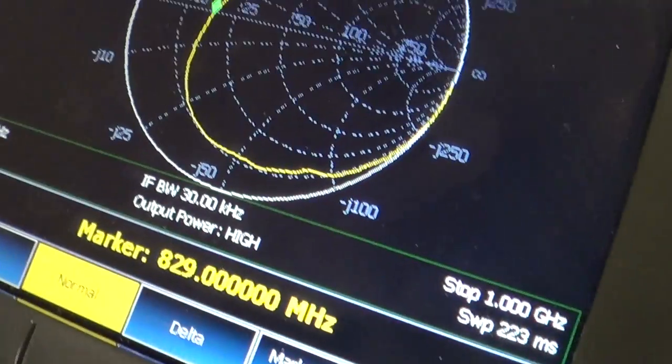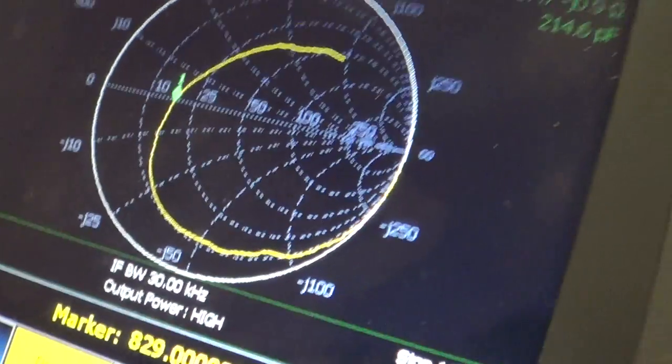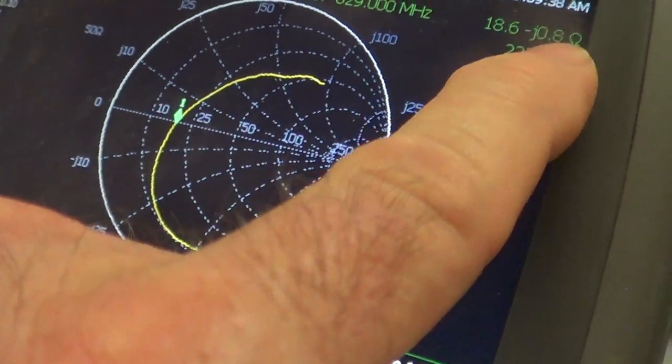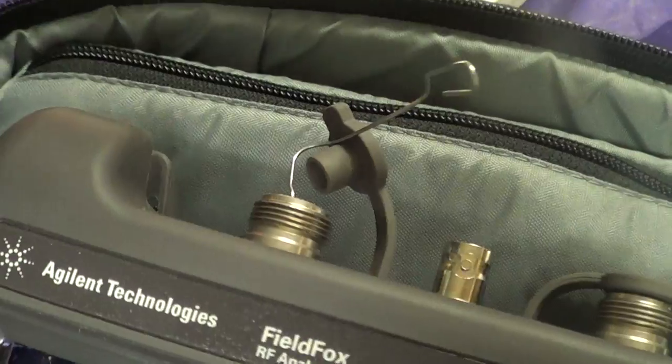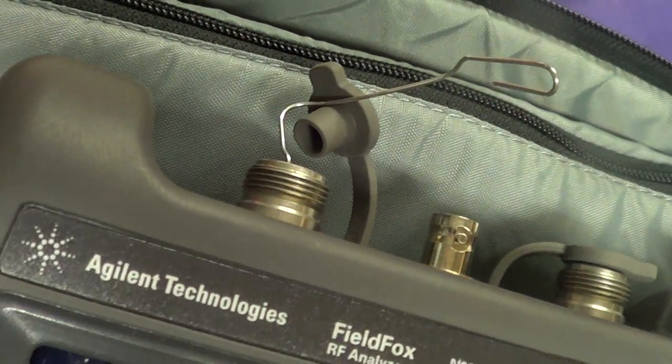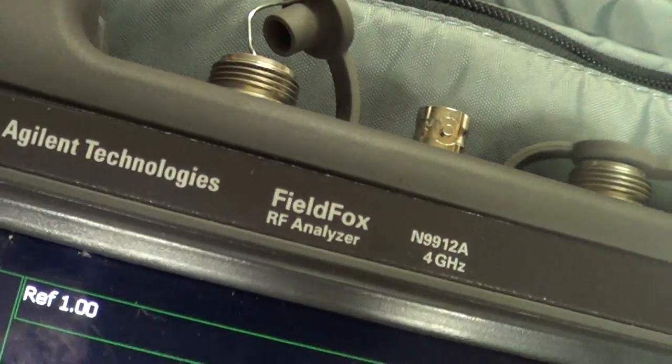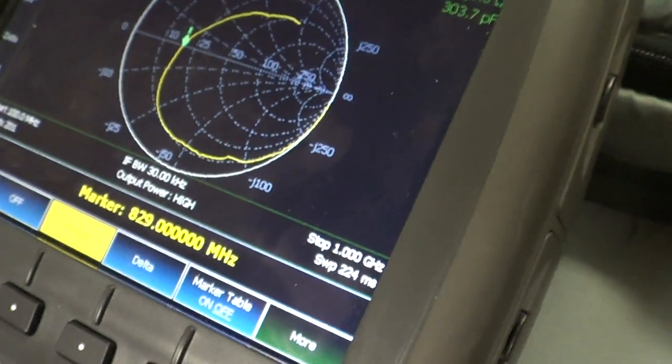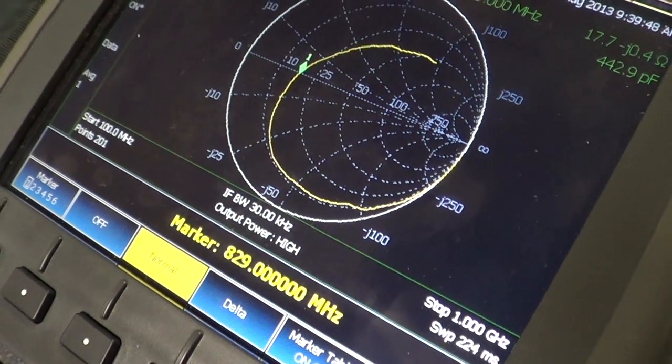There's the first resonance right here - 829 megahertz, got about 18 ohms. That's with the paper clip here on the Field Fox 4 gigahertz unit on the Smith chart.